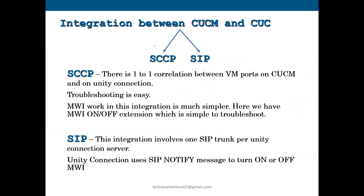The integration between CUCM and Unity can be done in two ways — either through SCCP or through SIP. SCCP means we can do the integration with the help of ports. And if we are doing the SIP integration, then we can just make a trunk and then do the integration.